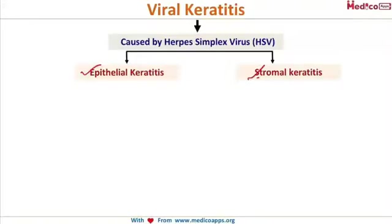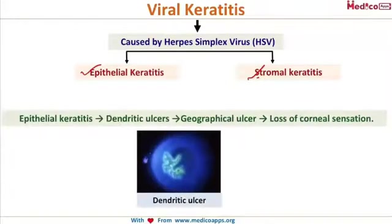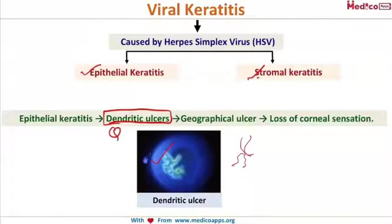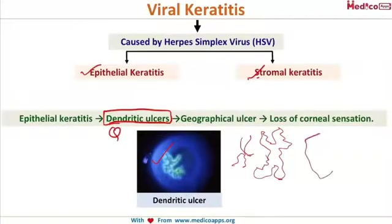Both epithelial and stromal HSV keratitis can occur in the cornea. The epithelial keratitis is characterized by dendritic ulcers — please don't forget this. When you see the word 'dendrite' in your questions, this is a true dendrite. We have seen a pseudodendrite in acanthamoeba, so the dendrites in viral keratitis are called true dendrites. Look at this picture — such beautiful dendrites showing a branching pattern of the ulcer.